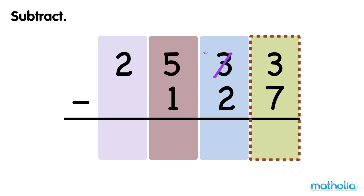Now we have 2 tens and 13 ones. Now we can subtract the ones. 13 ones minus 7 ones equals 6 ones.